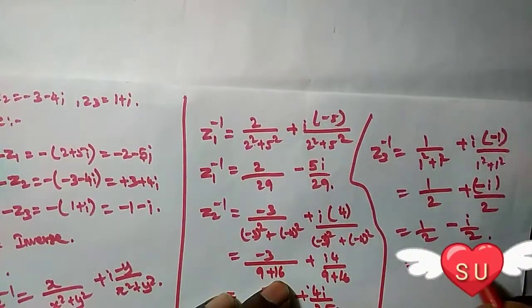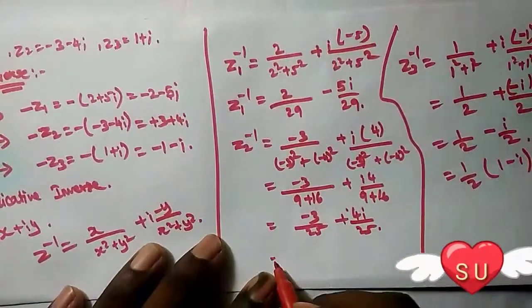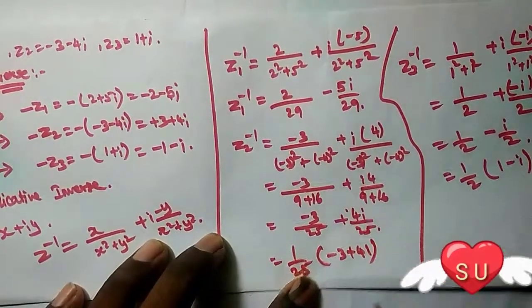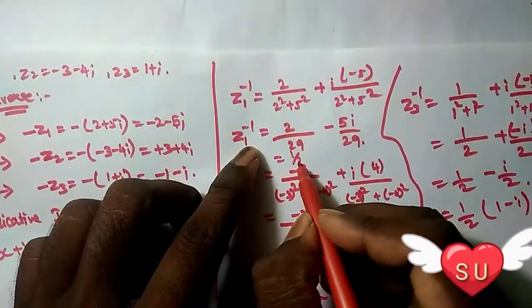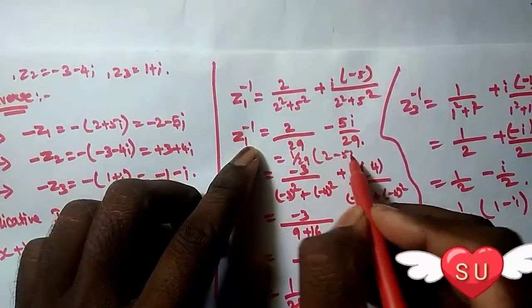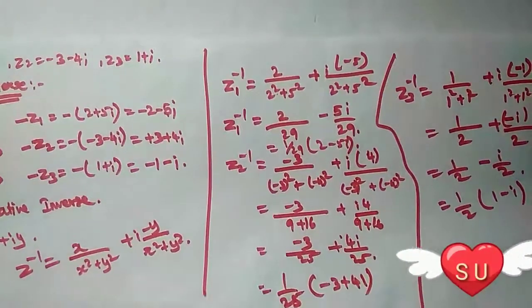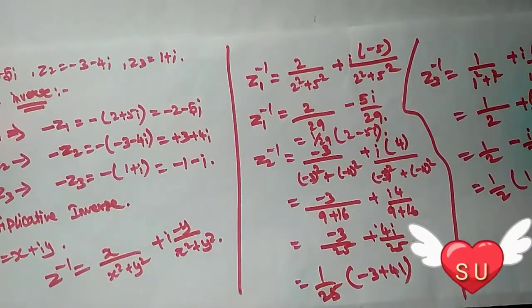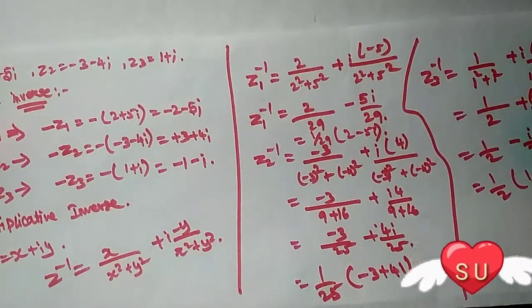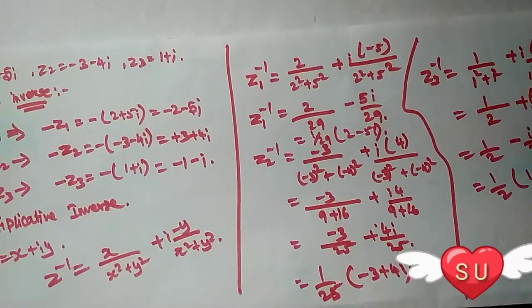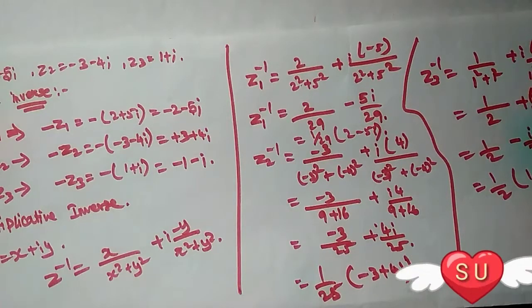So the answers are: 1/2 times (1 - i), or you can write 1/25 times (-3 + 4i), or 1/29 times (2 - 5i). These are the answers. Friends, if you have any doubts, comment below. Please subscribe to the channel, like, and share. Thank you.